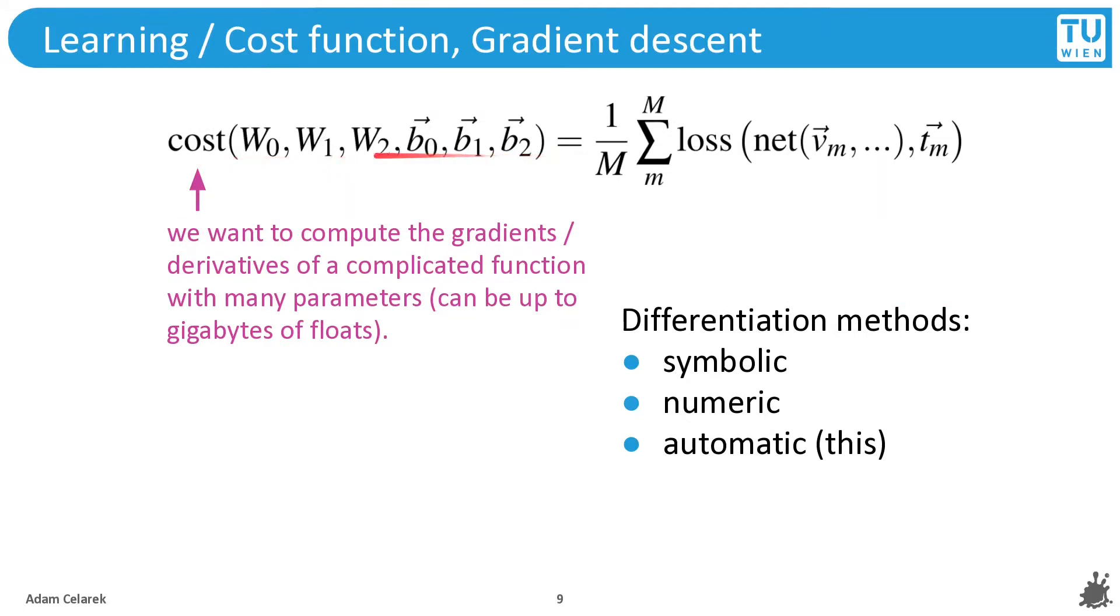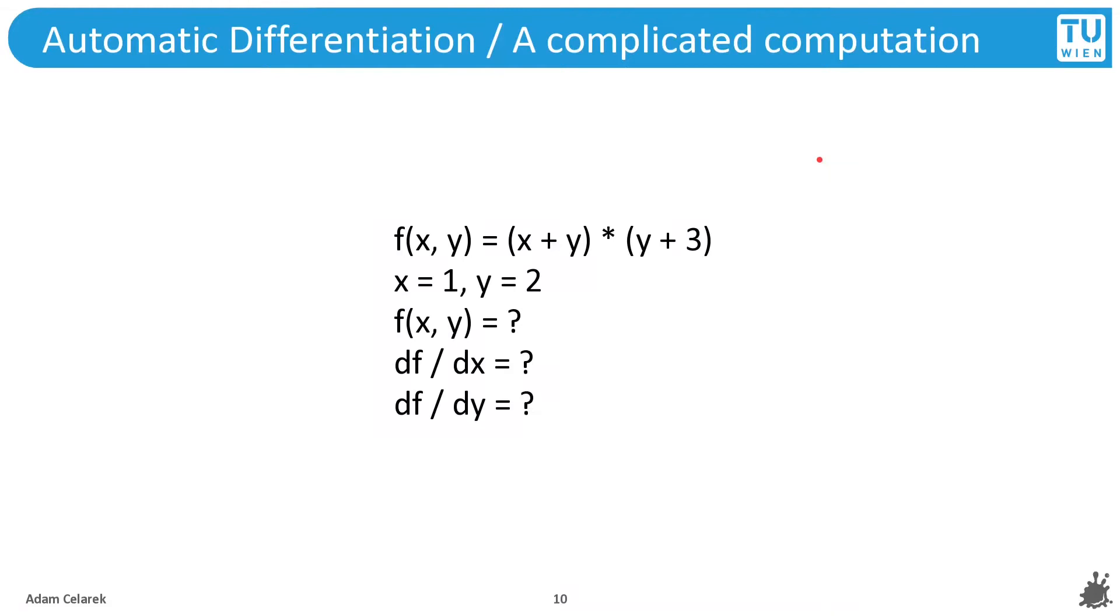We have the cost function which depends on these parameters, and we want to optimize these parameters using gradient descent. So we need a gradient. Several differentiation methods: We have symbolic, which is basically what you get out of Mathematica, but you would get a separate expression for every scalar in this matrix. You could go numeric, which is evaluating this cost function for x and for x plus a small delta, and then compute the difference. But to do this we would have to evaluate the network at least two times, and this is also expensive.